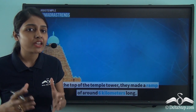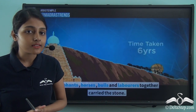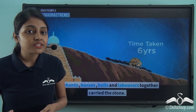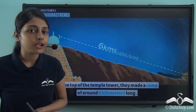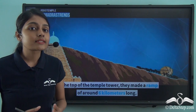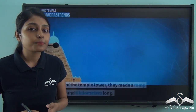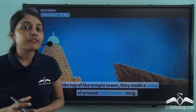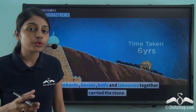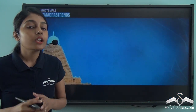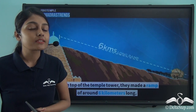When this temple was being constructed, technology hadn't advanced and cranes weren't available to lift this massive 90-ton stone to the top of the tower. So laborers and craftspersons built a long ramp or inclined plane of around 6 kilometers. With the help of this ramp, laborers, bullocks, elephants, and horses rolled the stone to the top of the temple. In this way the shikhara of the Raja Rajeshwara temple was made — a testament to how perfect this one piece of architecture is.